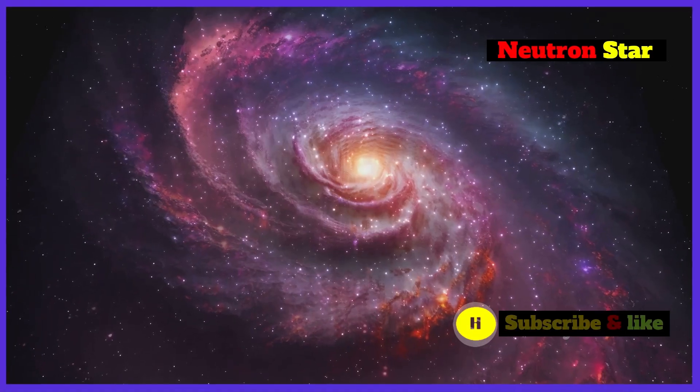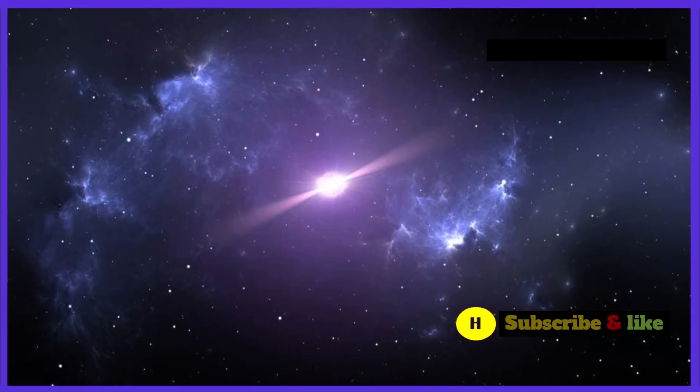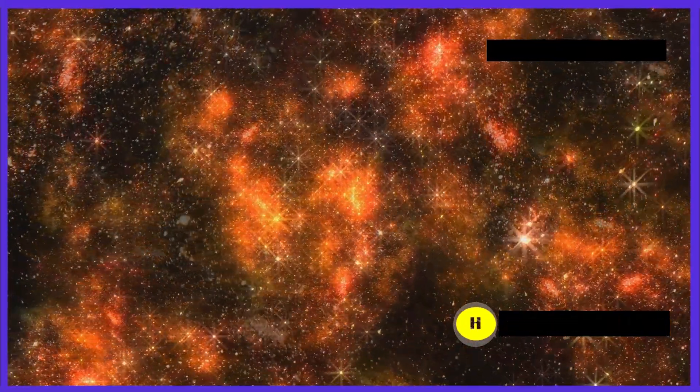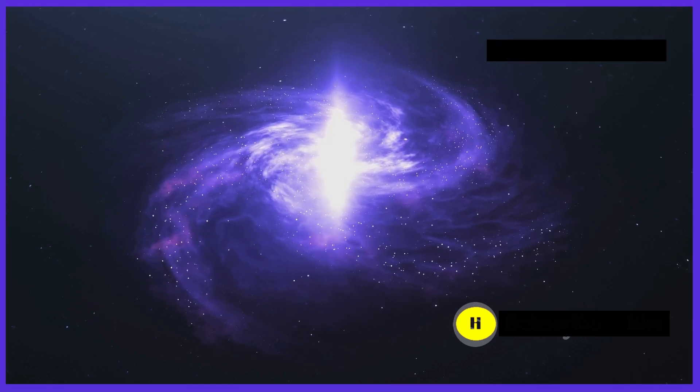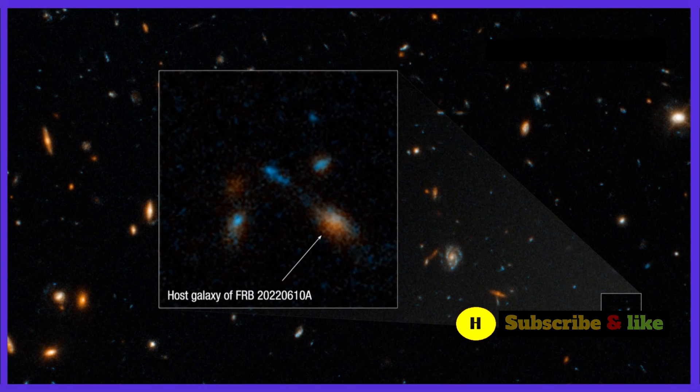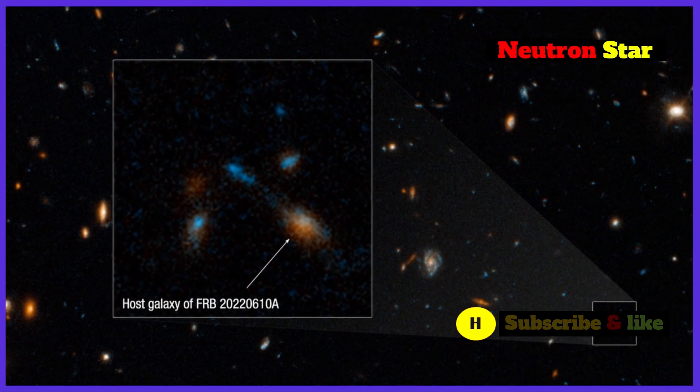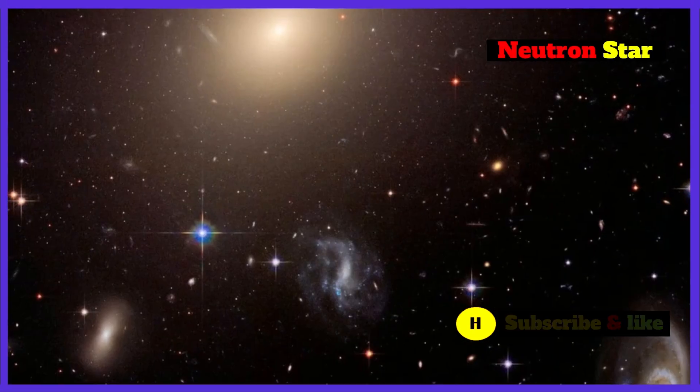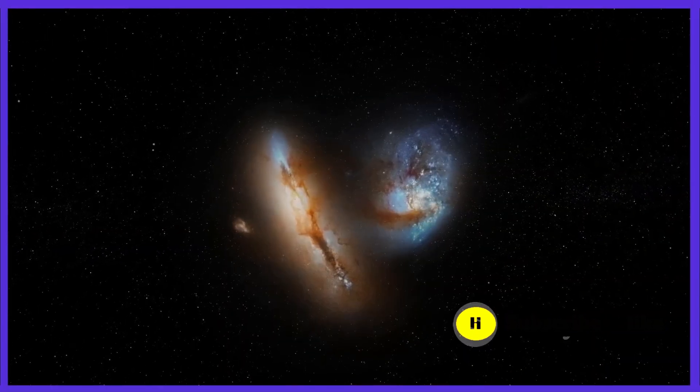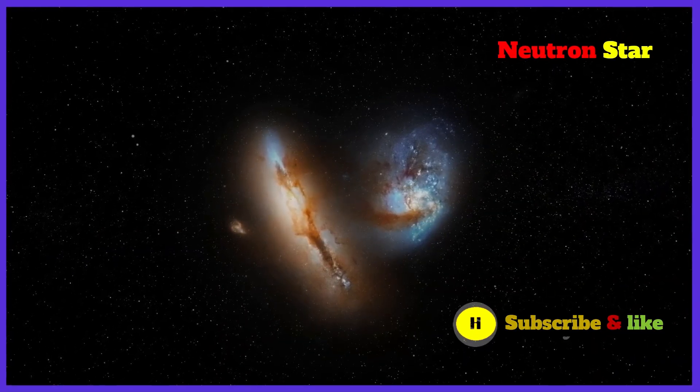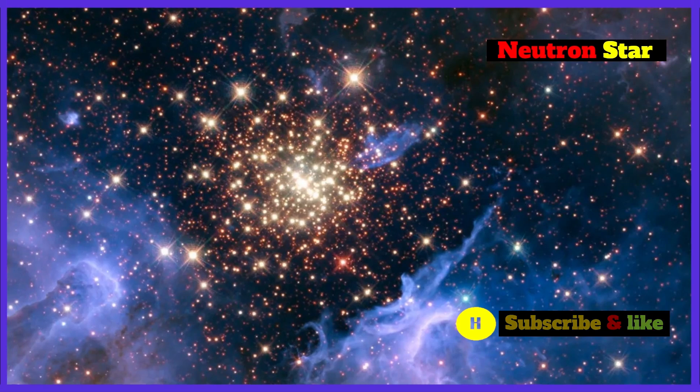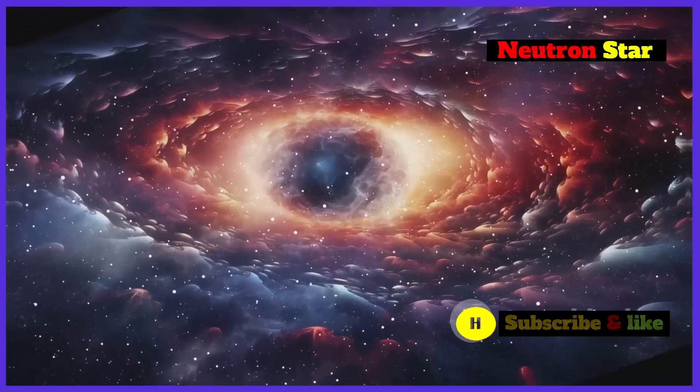FRBs are not just fascinating objects in their own right. They also serve as powerful tools for studying the universe around them. Imagine them as cosmic beacons, illuminating the vast spaces between galaxies. As FRB signals travel through space, they interact with the gas and dust that lie between galaxies. This interaction leaves subtle imprints on the signal, like a cosmic fingerprint. By studying these fingerprints, astronomers can map the distribution of matter in the universe. This helps us understand the structure of the cosmos and the properties of the mysterious intergalactic medium.